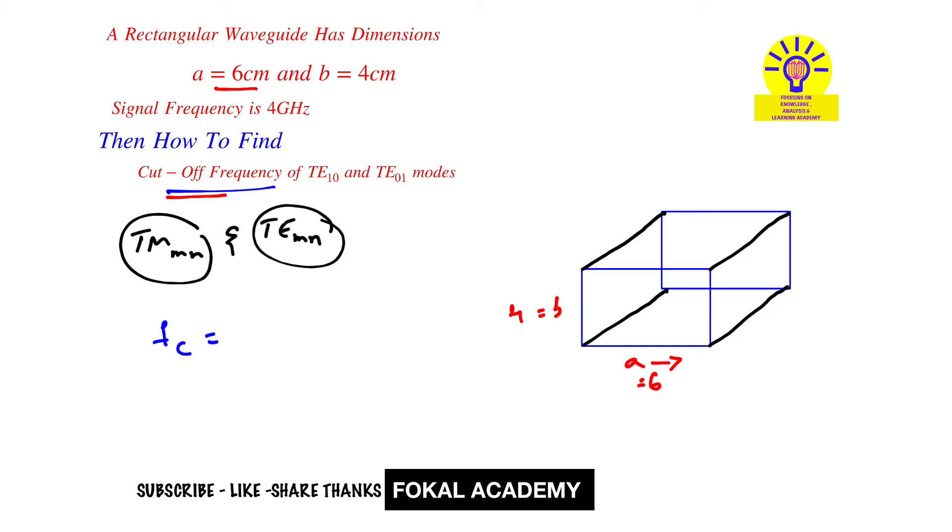For TEM_mn mode and TE_mn mode, the cutoff frequency fc = (c/2)√[(m/a)² + (n/b)²]. The cutoff frequency is the same for both TEM_mn mode and TE_mn mode.